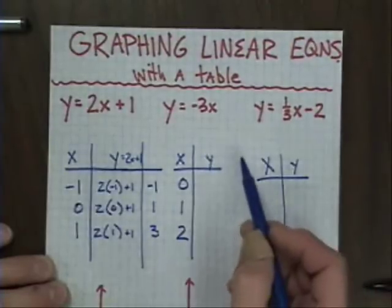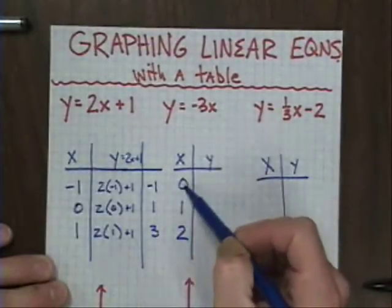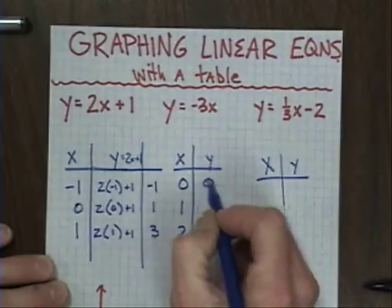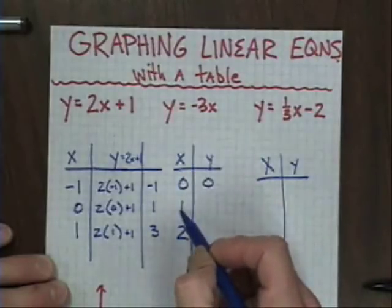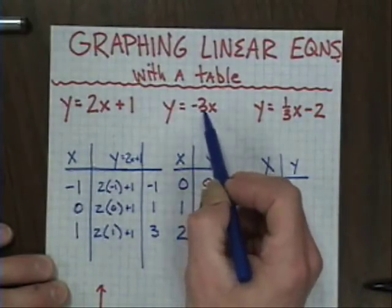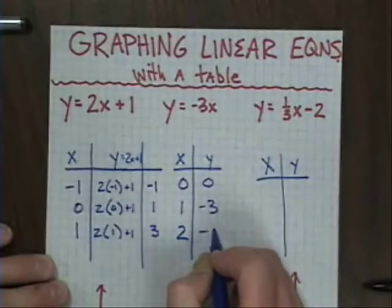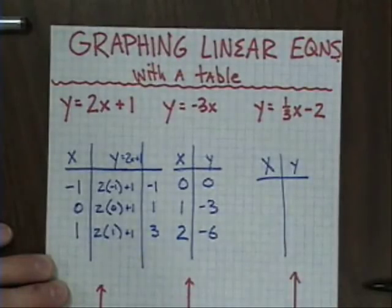And if I do this one in my head, negative 3 times 0 would be 0. Negative 3 times 1 would be negative 3. And negative 3 times 2 would be negative 6. Again, we'll come back to the graph here momentarily.